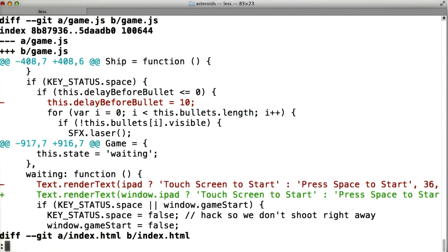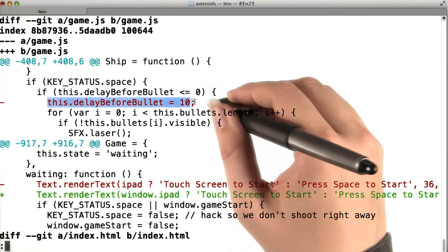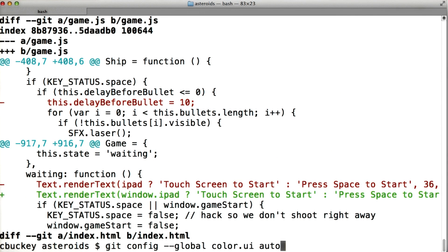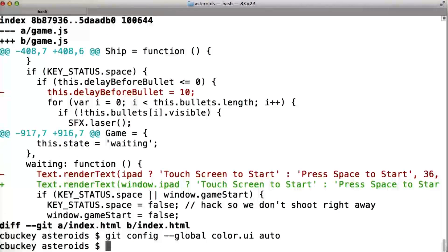In order to get the colored diff output like you saw earlier, with red for deletions and green for insertions, run the command git config --global color.ui auto. If you don't do this, you'll just see black and white diffs, which will be harder to read.